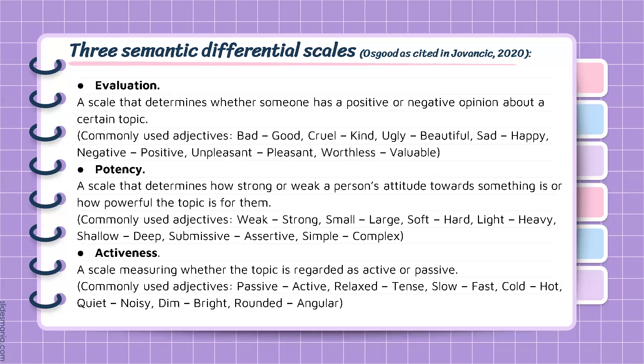Activeness scale measures whether the topic is regarded as active or passive. Commonly used adjectives are: passive/active, relaxed/tensed, slow/fast, cold/hot, quiet/noisy, dim/bright, and rounded/angular.